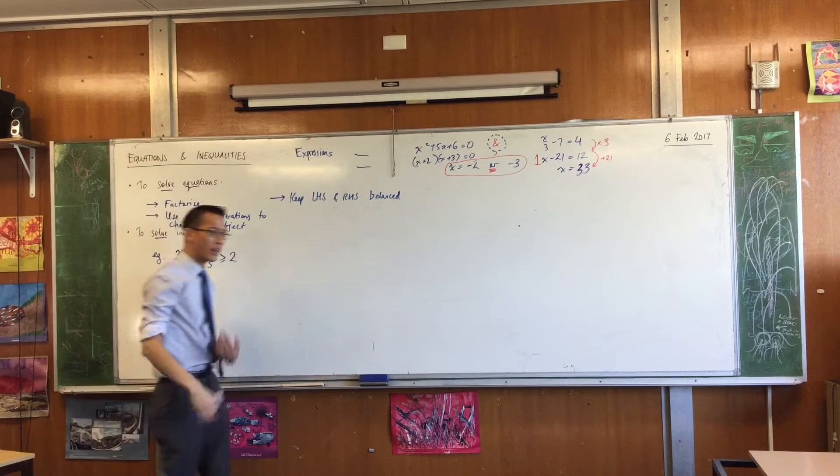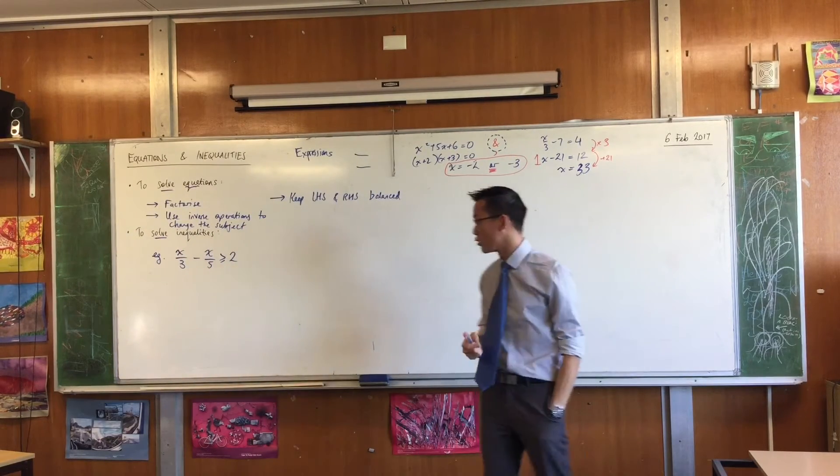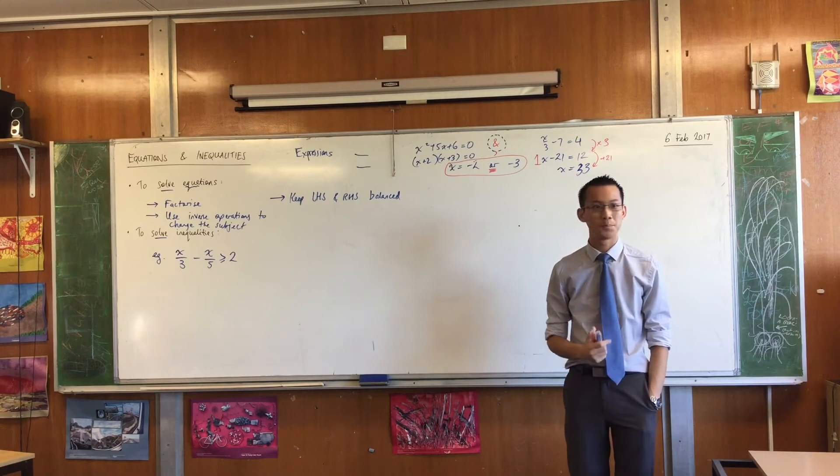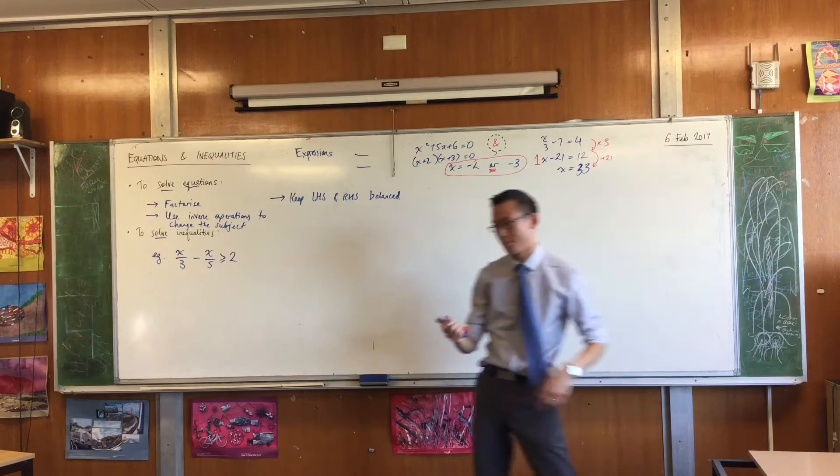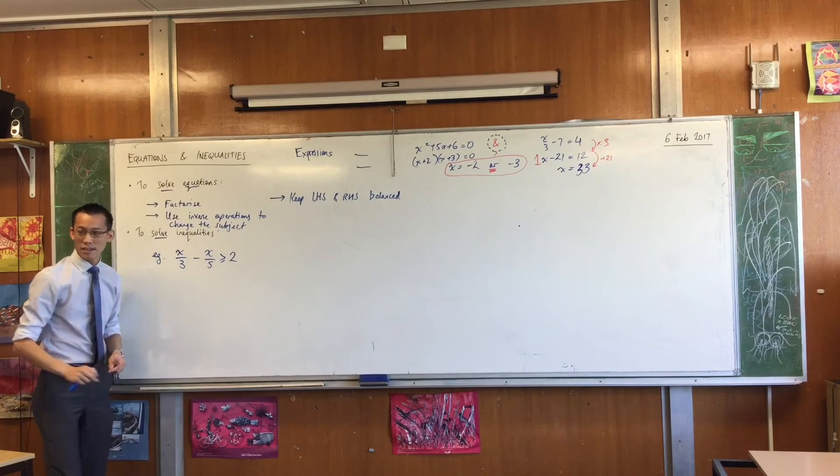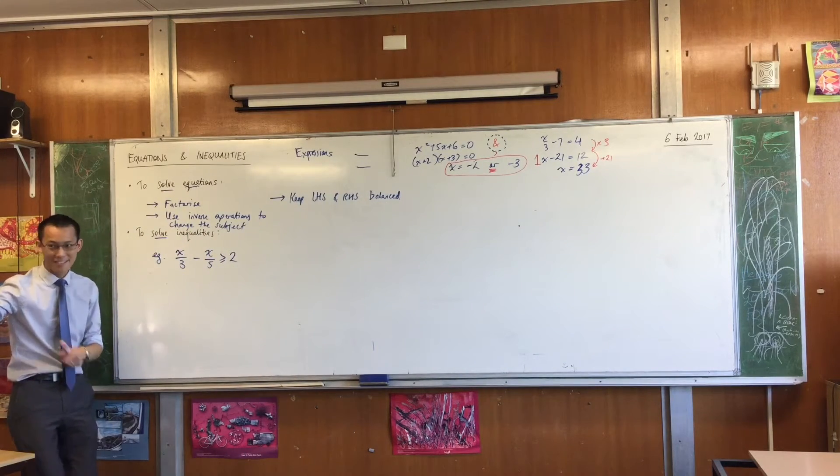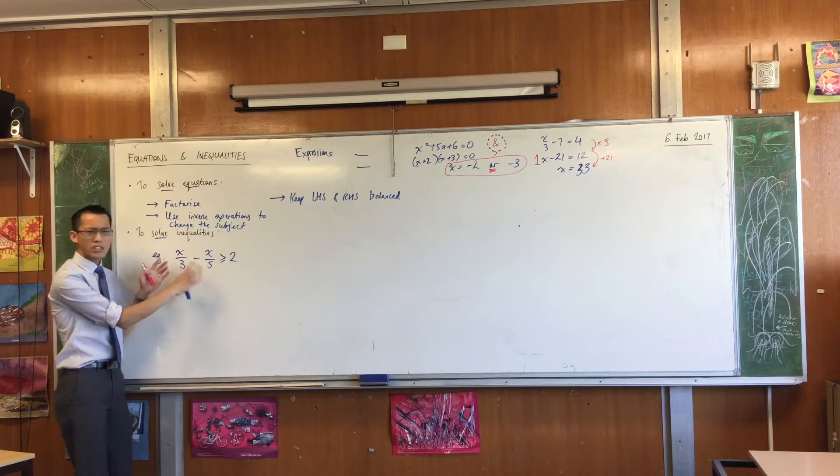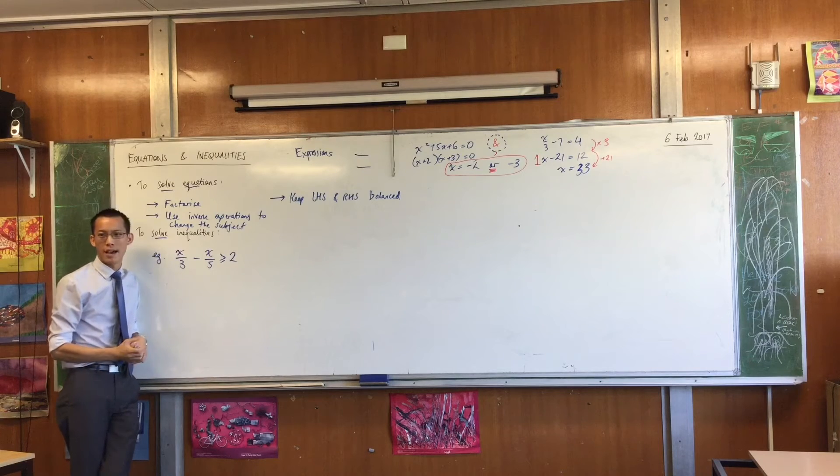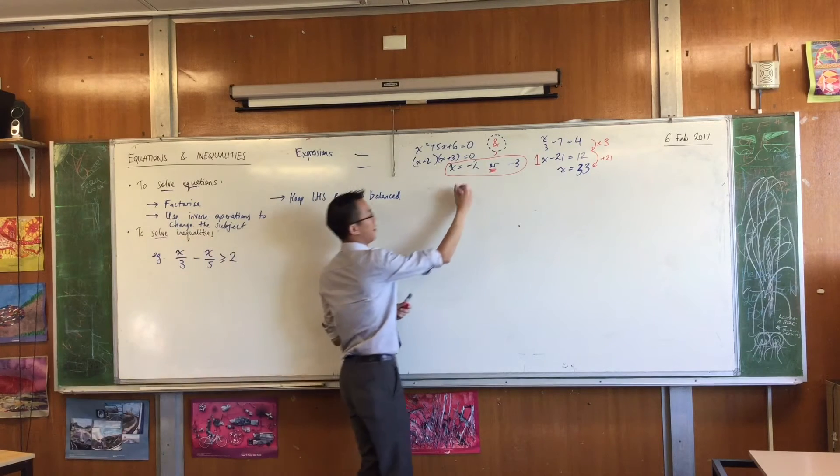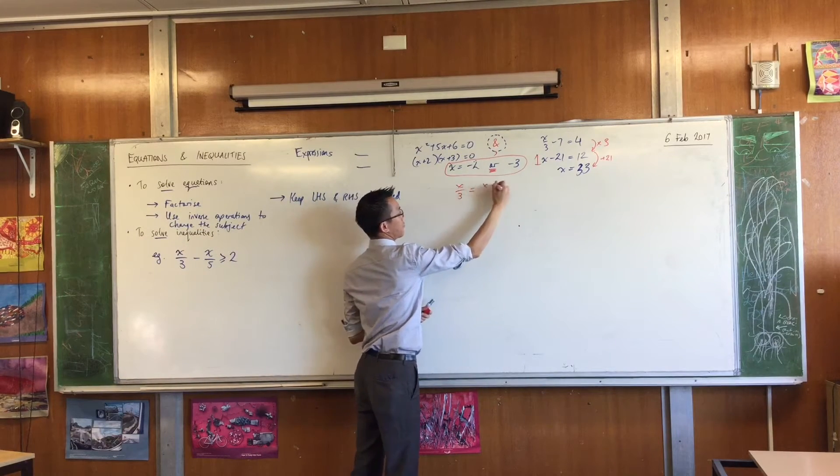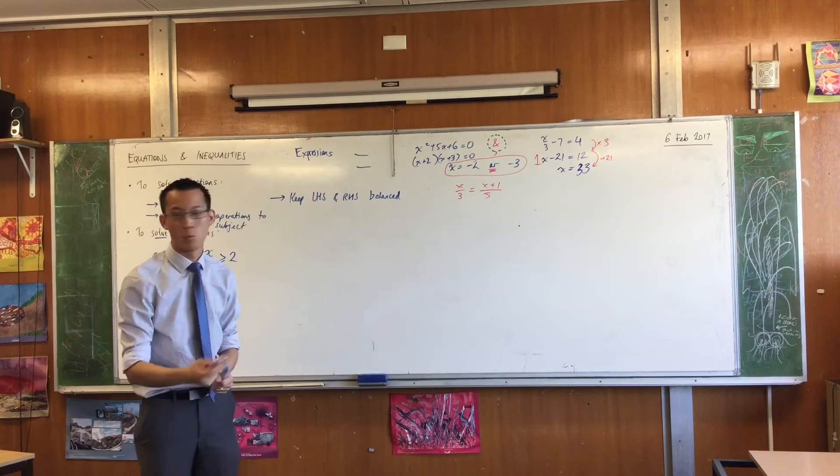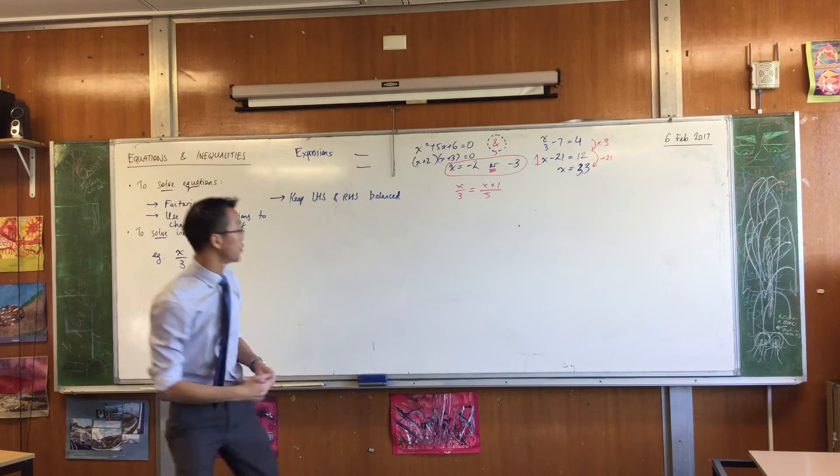Alright hands down now we're going to solve this one and I want to point out something very unusual as we do it. Can someone give me a suggestion for a first line? What might I do? Cross multiply to 5x 3x. I'm going to pause you there. I'm going to come back to this idea. The phrase I heard was cross multiply. What's cross multiplying about? Why do we cross multiply in a situation like this?